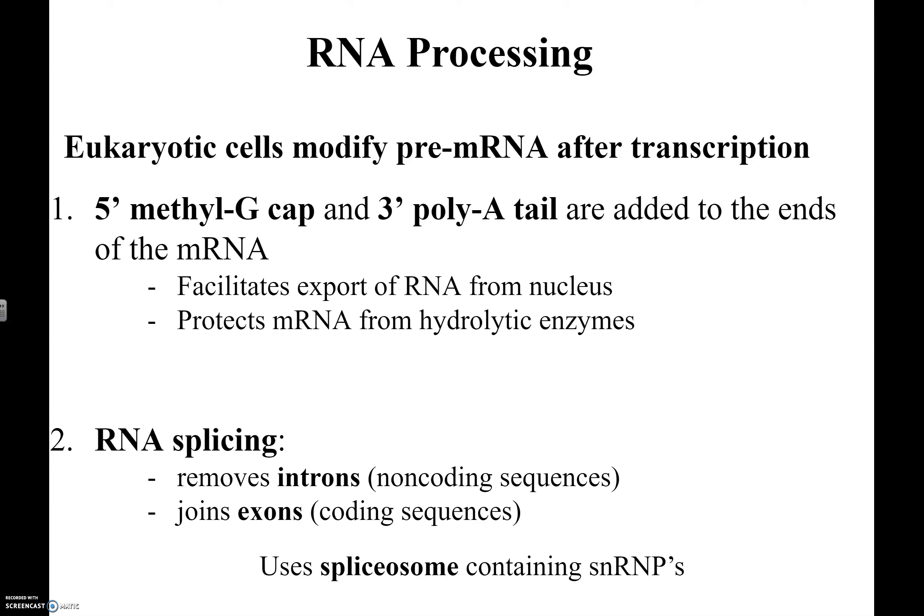Once the 5' cap and poly-A tail are added, the RNA also undergoes something called splicing. In the RNA sequence, there are both coding sequences and non-coding sequences. The coding sequence of RNA is what's used to actually determine the amino acid sequence and help make the protein, while the non-coding sequences need to get cut out. The non-coding sequences are referred to as introns, while the coding sequences are referred to as exons.